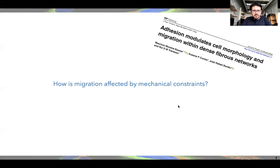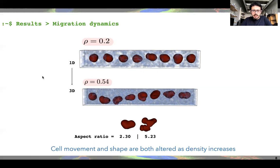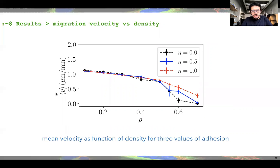The key question we'd like to answer is: how is migration affected by mechanical constraints? We start by observing the system qualitatively. For a low density of fibers, the cell can move almost freely in a unidimensional way. When we increase the density of fibers, the cell needs to squeeze and deform more in order to get through the interstitial space, and we observe a more three-dimensional path. We also measure the mean velocity as a function of fiber density — the velocity decreases as density increases, which is expected since a more crowded environment makes it more difficult for the cell to move.